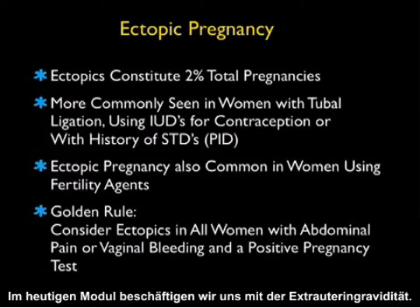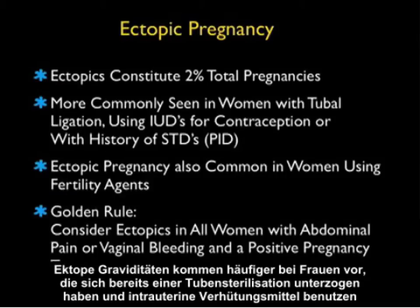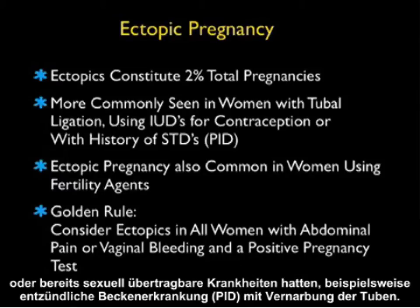Today's module is going to focus on ectopic pregnancy. Ectopic pregnancies constitute about 2% of all total pregnancies, although they're commonly seen in the emergency department. Ectopic pregnancy is more commonly seen in women with a history of tubal ligation, who are using intrauterine devices for contraception, or have a history of sexually transmitted diseases such as pelvic inflammatory disease with scarring of the tubes.